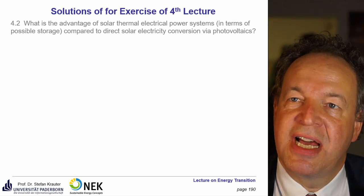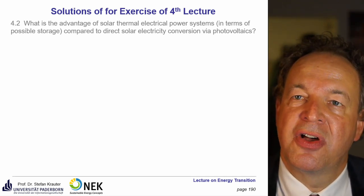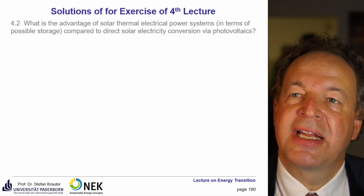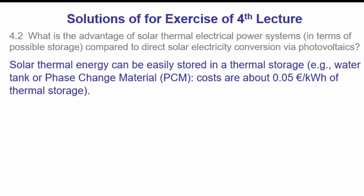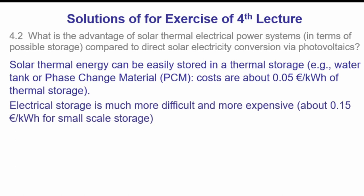The second question: what is the advantage of solar thermal electrical power systems in terms of possible storage compared to direct electricity conversion via photovoltaics? Solar thermal energy can be easily stored in thermal storage — for example, a water tank or phase change material. For large-scale systems, costs are around 5 cents per kilowatt hour. Electrical storage is much more difficult and expensive: batteries cost about 15 cents per kilowatt hour, while pumped hydro goes down to about 5 cents per kilowatt hour.